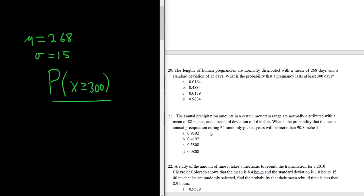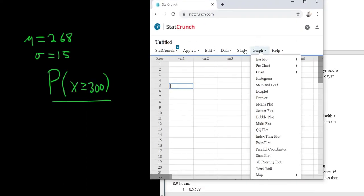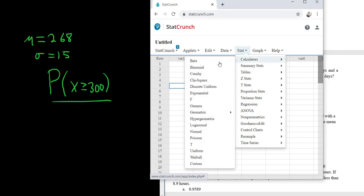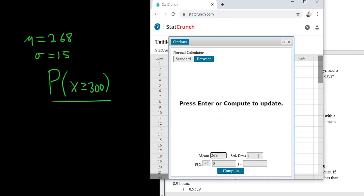So all we have to do now is go to StatCrunch. So we go to Stat, Calculators, and then you go down to Normal. And then just enter the mean, so 268. Enter the standard deviation, so 15.